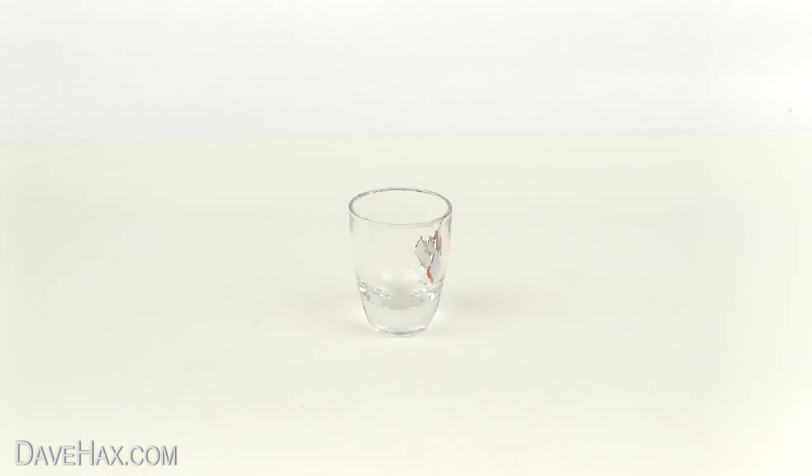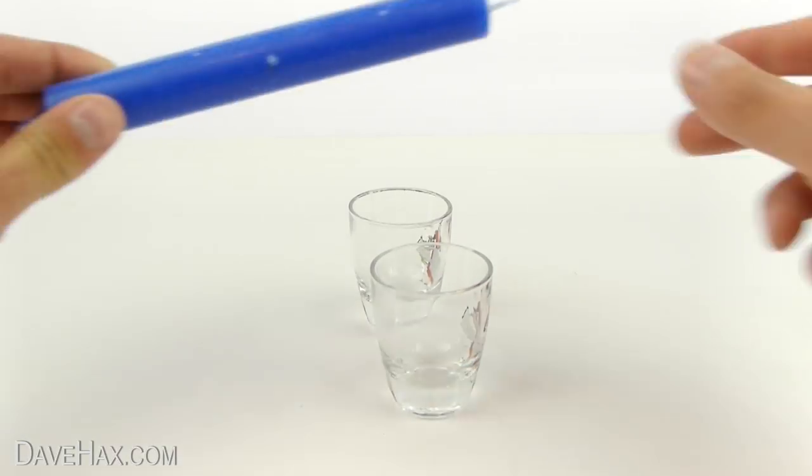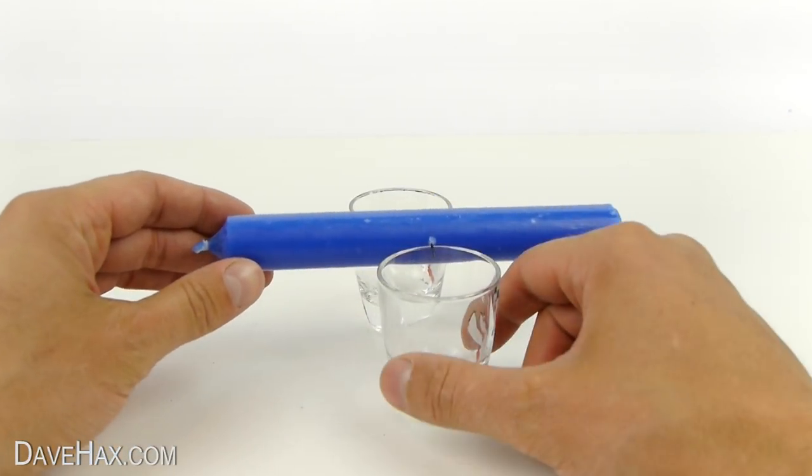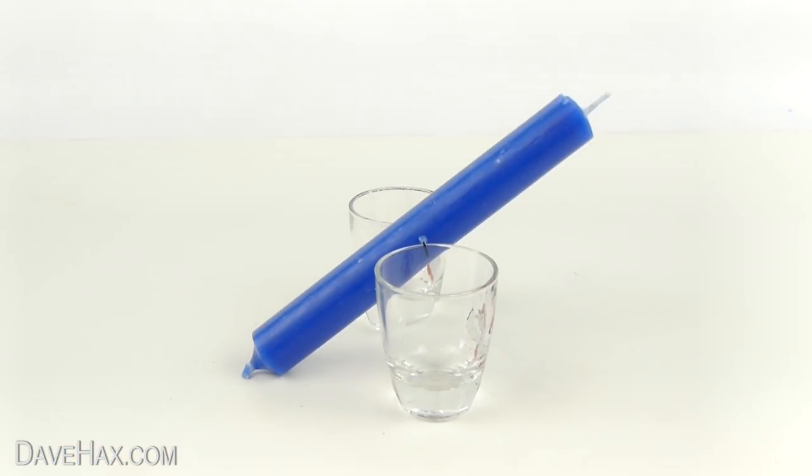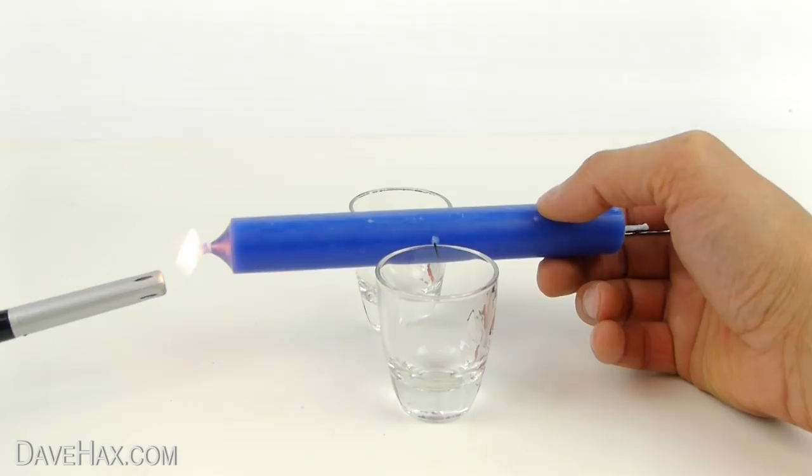Next, take a couple of small glasses and balance the candle in between them, like this. You'll probably find the candle falls to one side because it's not perfectly balanced. So lift up the lower end and light that side of the candle.